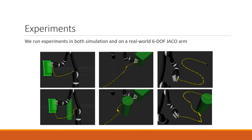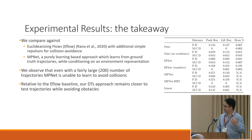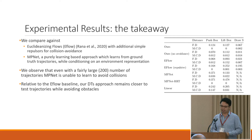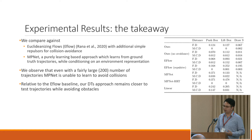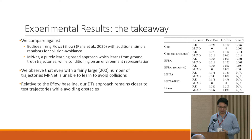For experimental results, we compare against euclideanizing flows from Rana 2020 with additional repulsors for collision avoidance, and against MPNet, a purely learning-based approach that conditions on the environment to generate trajectories. Even with a fairly large number of trajectories, MPNet is unable to learn to avoid collisions. Relative to the euclideanizing flows baseline, our diffeomorphic templates approach remains closer to the test trajectories while avoiding obstacles.